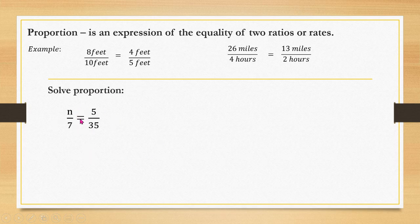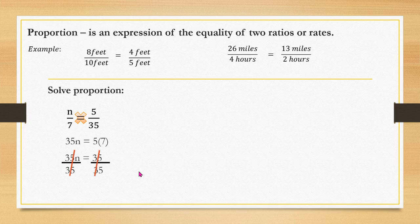Solving proportions may involve an unknown. We use cross multiplication: multiply n times 35 and 7 times 5. This gives us 35n = 35. Divide both sides by 35, so n = 1.